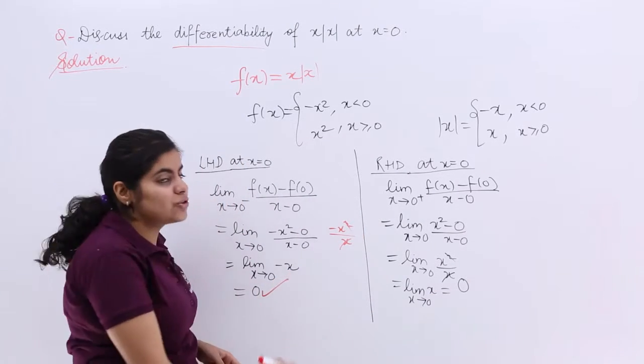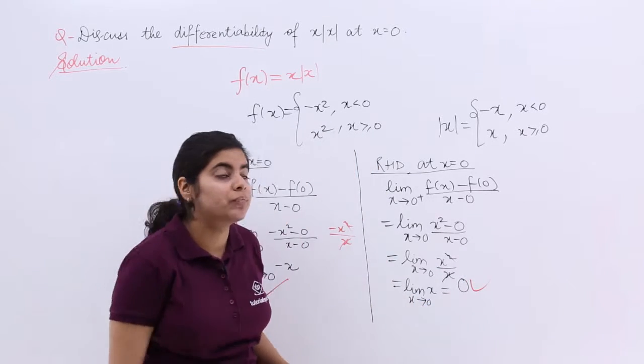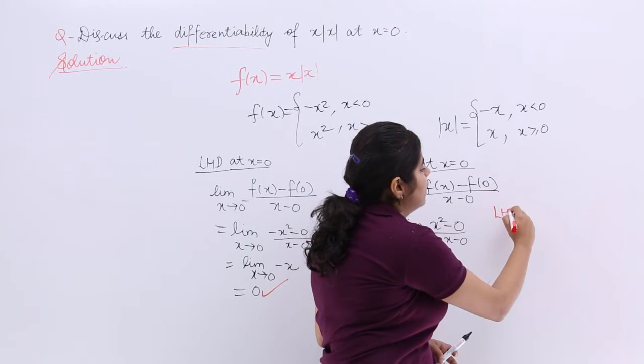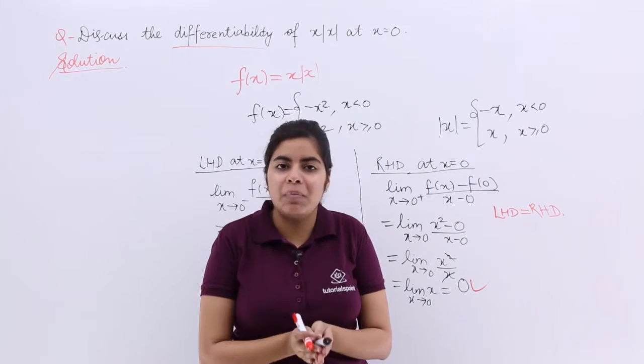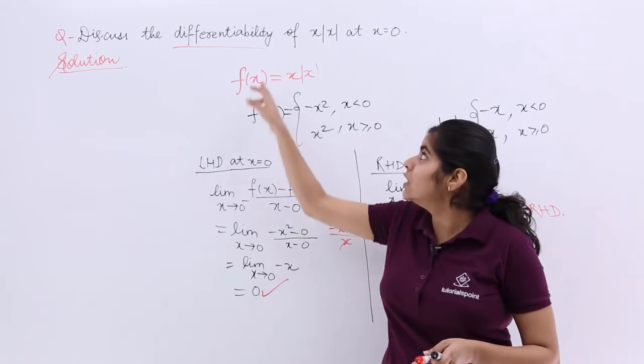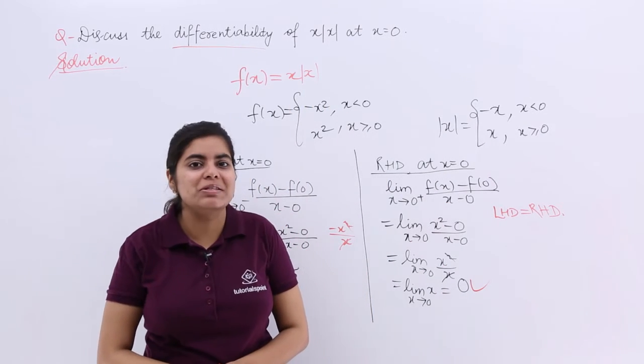So you see that the answer to the left hand derivative is 0. The answer to the right hand derivative is 0. Since left hand derivative is coming out to be equal to the right hand derivative, I say that my function, the function which function? f(x). x mod x is differentiable at x is equal to 0.